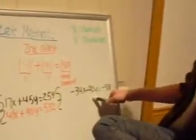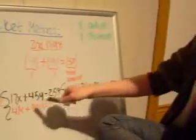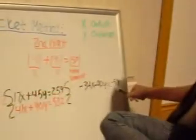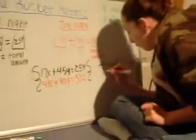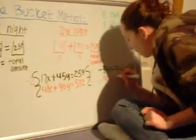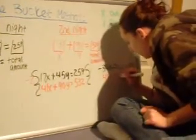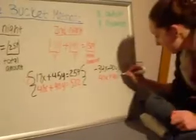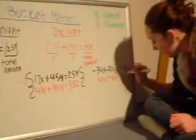45 times negative 2 is negative 90. 259 times negative 2 is negative 518. And then we're going to keep the second problem as is having it be 41X plus 90Y equals 532.